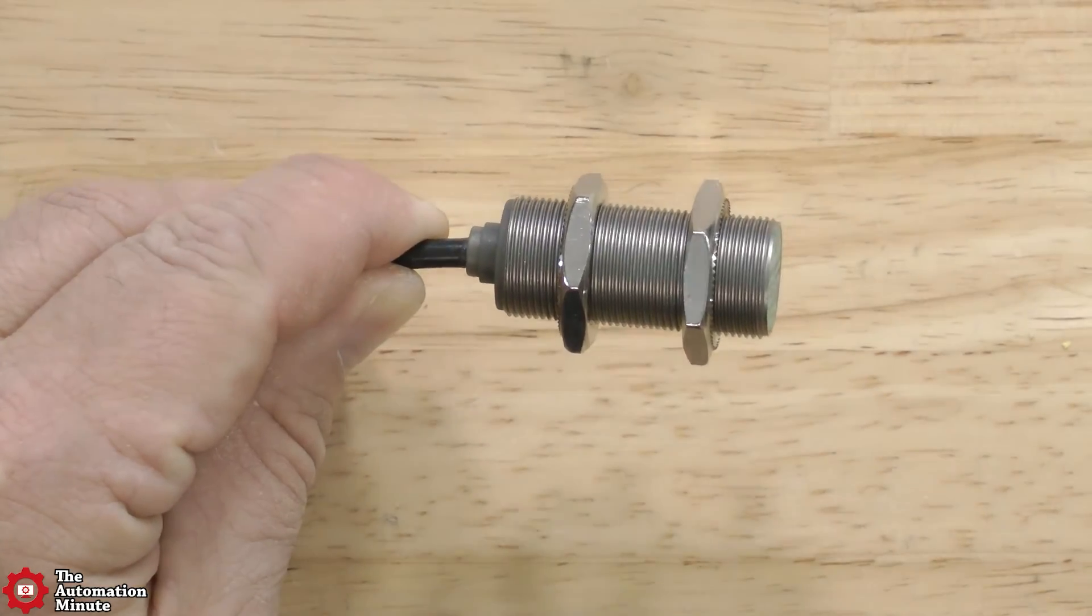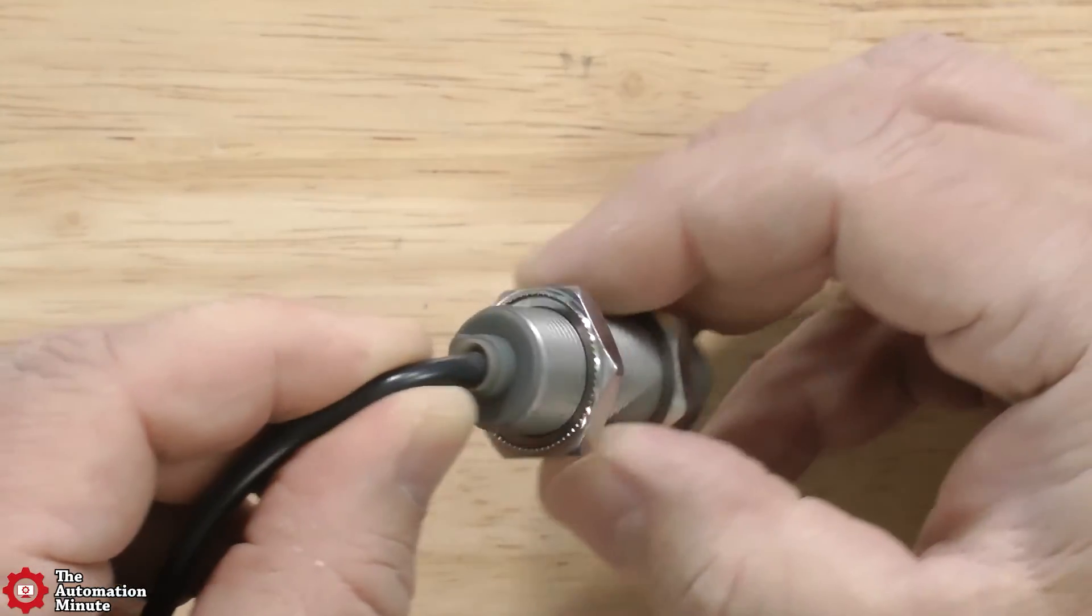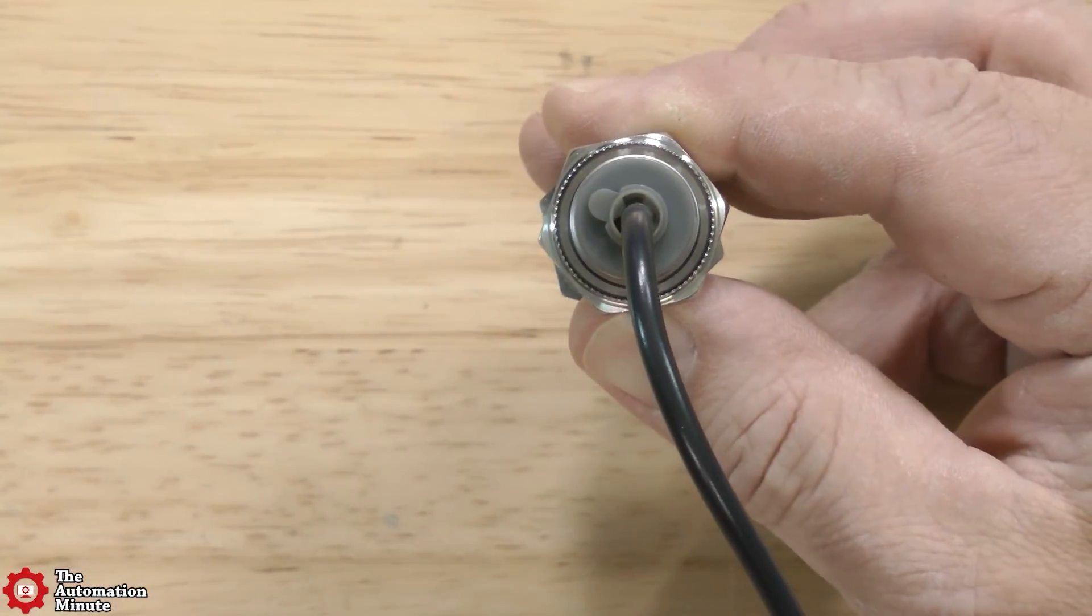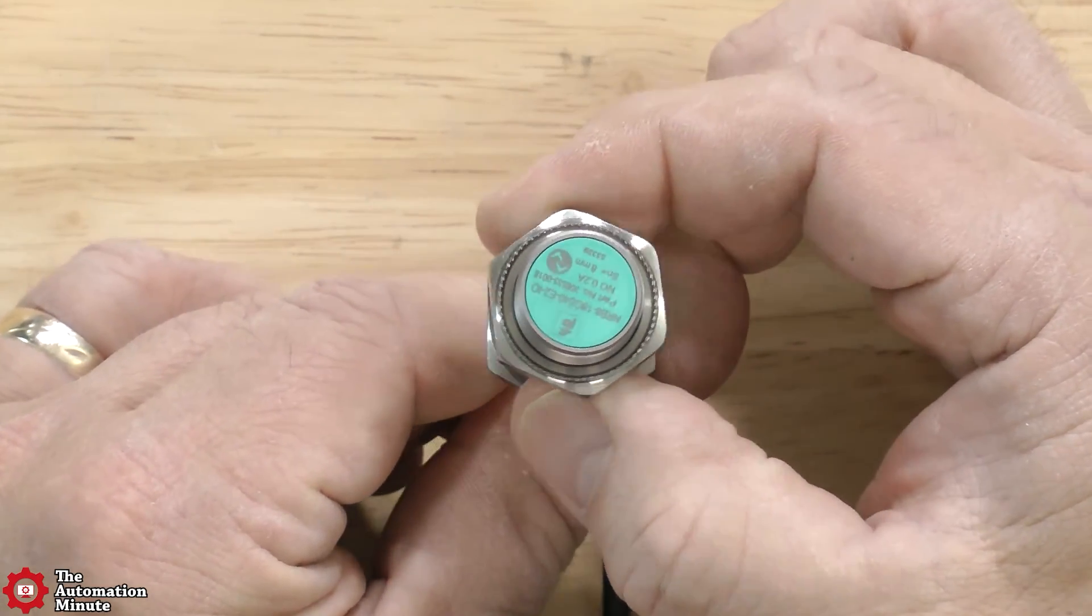Once it's out of the package, you can see it comes with two self-locking nuts on an M18 threaded body. It can be purchased with a pre-wired three-wire cable like I have here, or with a 4-pin M12 connector.